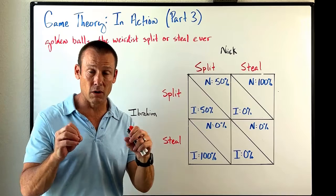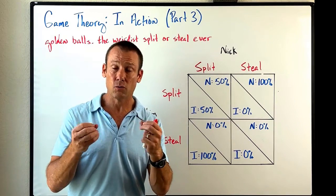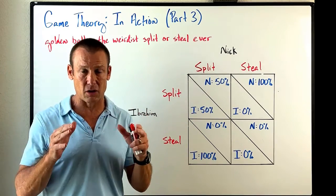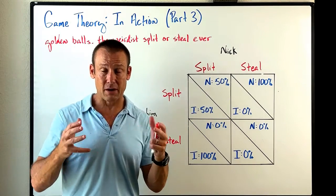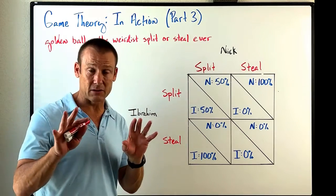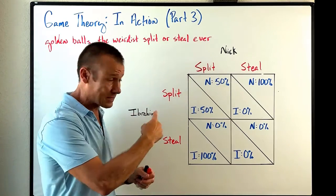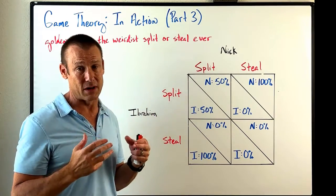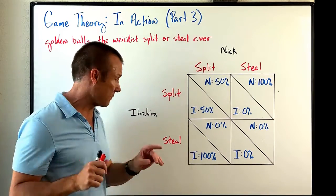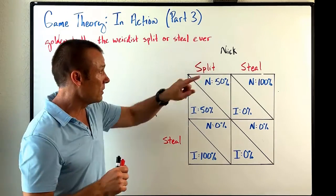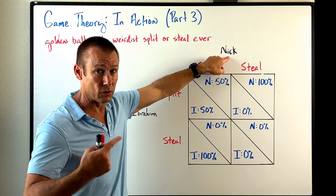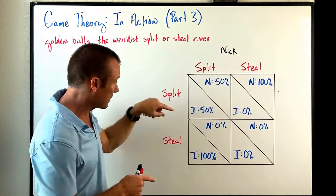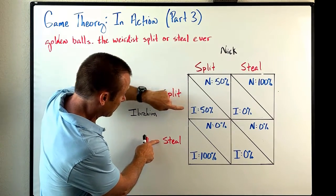So that was the game — that's the payoff matrix. What we want to do now is evaluate whether or not a player has a dominant strategy. That's kind of our starting point. Does a player have a dominant strategy? Let's start with Ibrahim. Before I get going too far, this is a symmetrical game, so if Ibrahim has a dominant strategy, Nick has the same dominant strategy. So: does Ibrahim have a dominant strategy? We go to the other player. If Nick played split, what should Ibrahim do? Should he play split or steal?